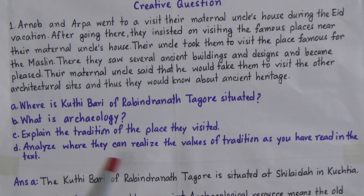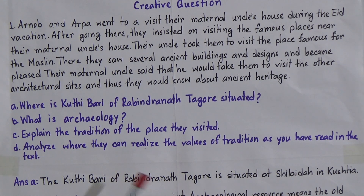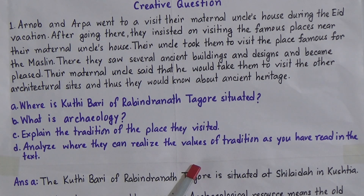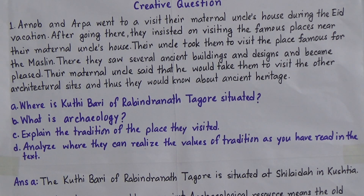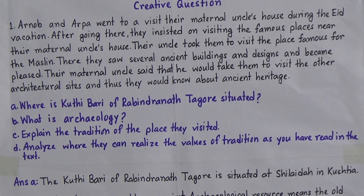Number D: Analyze where they can realize the values of tradition as you have read in the text. This question carries four marks. If we go to the museum, we can realize the values of the tradition through the archaeological resources. In the museum you can observe different archaeological resources, and these express the ideas, beliefs, and lifestyle of the nawabs and historical figures of our country.